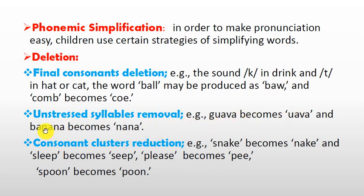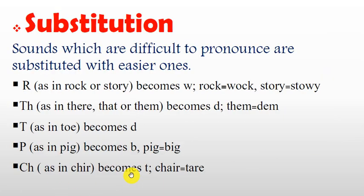Another strategy is unstressed syllable removal. For example, 'guava' becomes 'vava' and 'banana' becomes 'nana'. Children also use consonant cluster reduction. For example, 'snake' becomes 'nake', 'sleep' becomes 'seep', 'please' becomes 'pease', and 'spoon' becomes 'poon'.